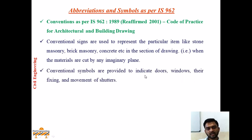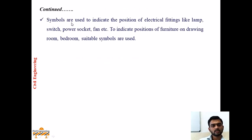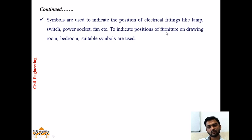Conventional symbols are provided to indicate doors, windows, their fixing, and movement of shutters when opened or closed. Various water supply and sanitary fixtures like tap, wash basin, WC (water closets), urinal, kitchen sink, and shower are to be shown as per IS. Symbols are also used to indicate the position of electrical fittings like lamp, switch, power socket, and fan, and to indicate the position of furniture in drawing room, bedroom, etc.